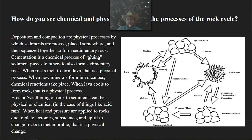So when you have deposition and compaction, these are physical processes by which sediments are moved, placed somewhere, and then squeezed together to form sedimentary rock. Cementation has to do with a chemical process where chemicals glue minerals to each other to form a sedimentary rock. So there's a chemical process right there.